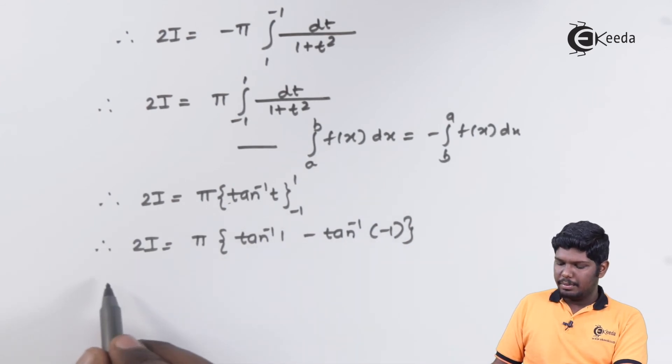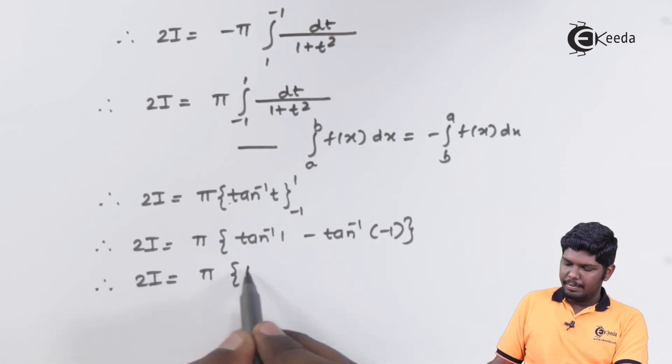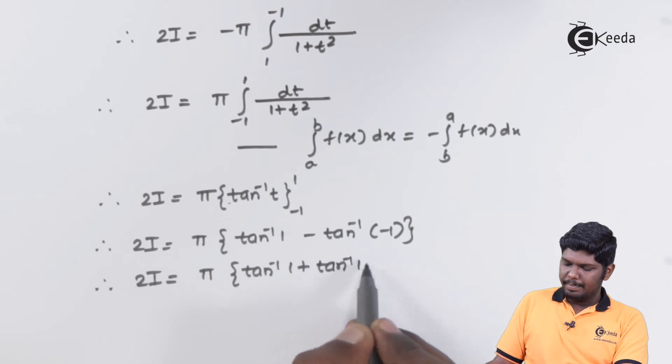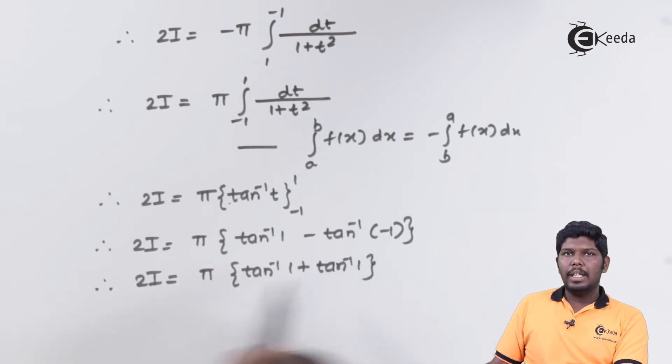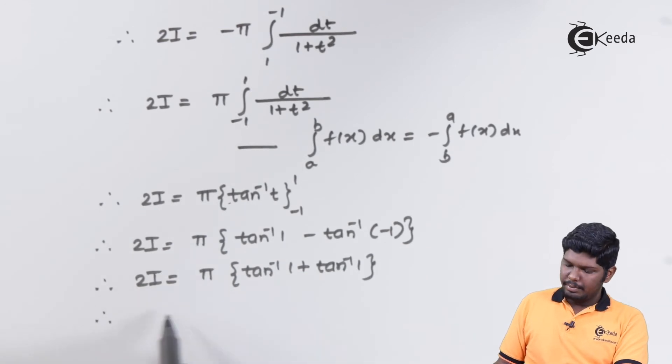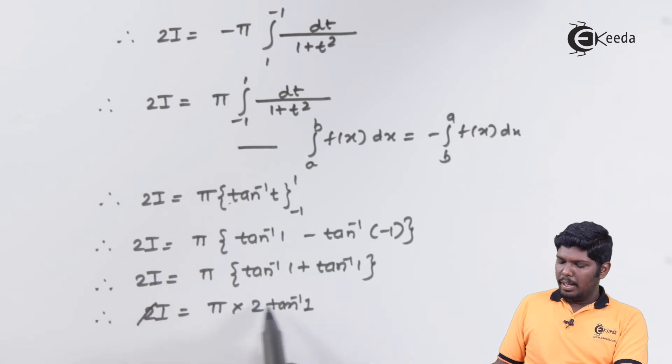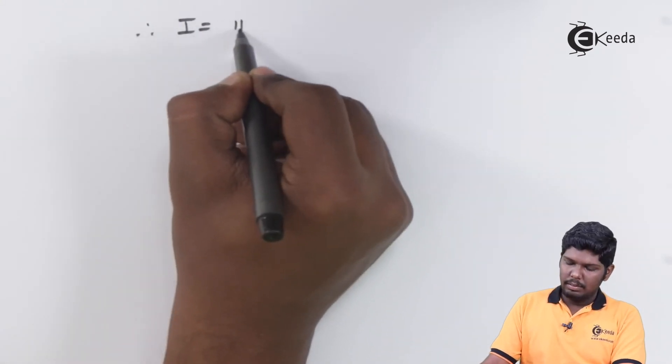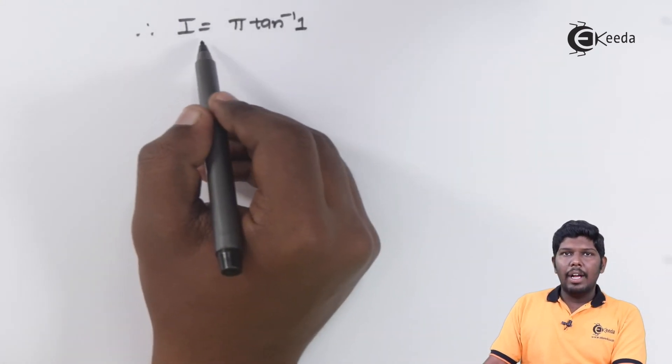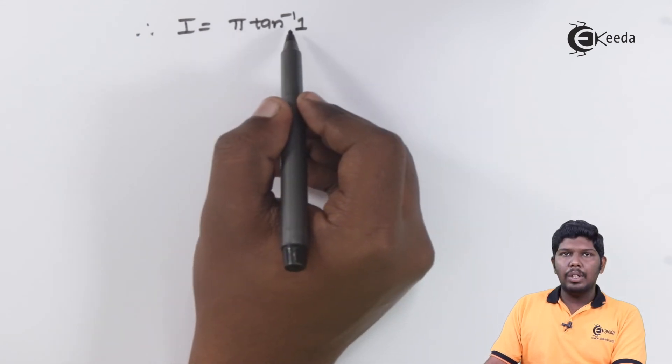Tan inverse of 1 plus tan inverse of 1 will give you twice tan inverse of 1. Here, 2 will be cancelled and the value of i will be pi into tan inverse of 1.